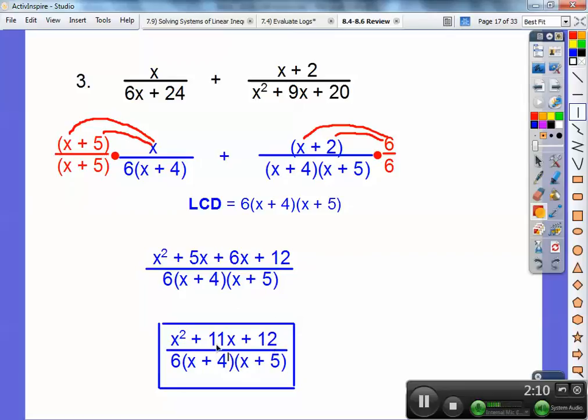I would look to see if this guy factors right here. Factors of 12 that add to 11, there aren't any factors of positive 12 that add to 11. There's factors of negative 12 that add to 11, but that's a positive 12, so this doesn't factor. So that's my answer, and always leave the denominators in factored form.